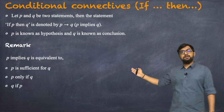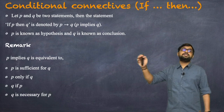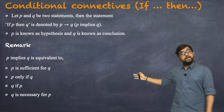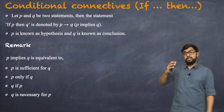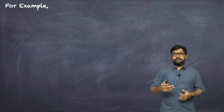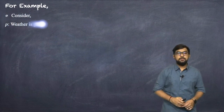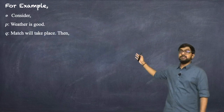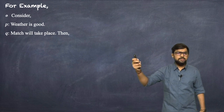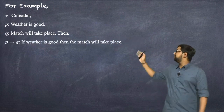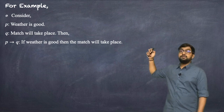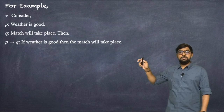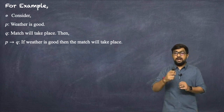P implies Q is equivalent to: 'P is sufficient for Q,' 'P only if Q,' 'Q if P,' and 'Q is necessary for P.' For example, let P be 'weather is good' and Q be 'match will take place.' Then P implies Q means: if weather is good, then the match will take place.